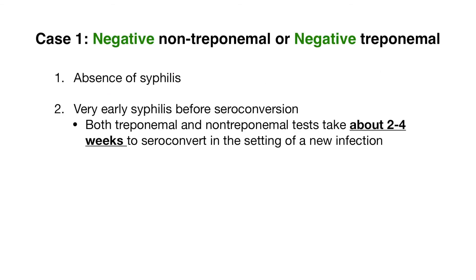Case number one: a patient comes in with either a negative non-treponemal test or a negative treponemal test if you did the reverse screen. This indicates that the person does not have syphilis, but there is a caveat. If the patient had a recent unprotected sexual encounter within the last few weeks, it's possible they have syphilis but it has not yet been detected, since both tests can take about two to four weeks to seroconvert in the setting of a new infection. If concerned, you can always retest the patient a few weeks later.